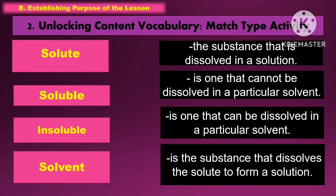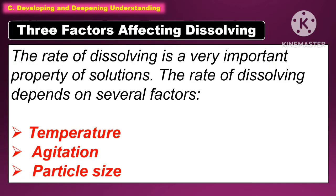In Unlocking Content Vocabulary, we are going to use the Match Type. In Developing and Deepening of Understanding, we are going to explain the three factors affecting dissolving. The rate of dissolving is a very important property of solutions. The rate of dissolving depends on several factors such as temperature, agitation, and particle size.